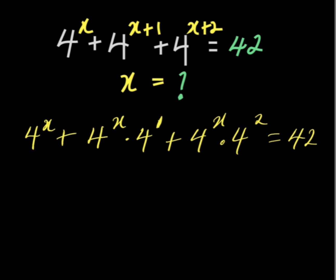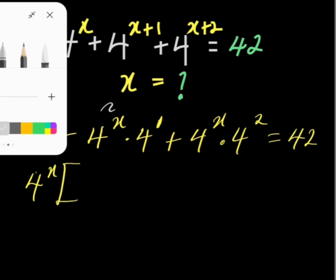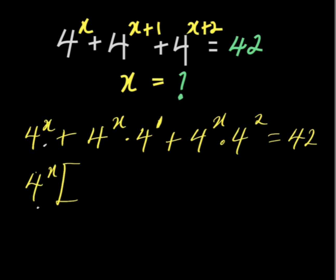Now, 4 to the power of x is common at the left hand side, so we can decide to factor out 4 to the power of x. When you factor out 4 to the power of x, you will have that 4 power x divided by 4 power x is 1 plus 4 power x dot 4 power 1 divided by 4 power x. 4 power x, we cancel out 4 power x, leaving us behind with 4 power 1.